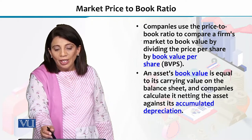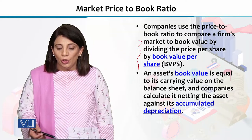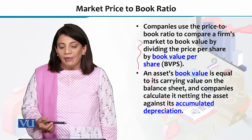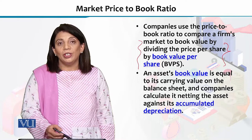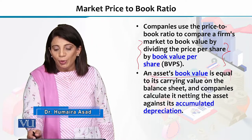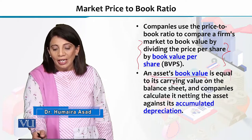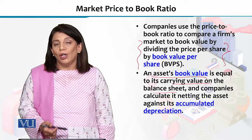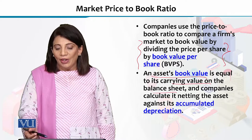Companies use this particular ratio to compare a firm's market to book value by dividing the price per share by book value per share, which is abbreviated as BVPS. The asset's book value is simply the carrying value on the balance sheet, which we call the book value.